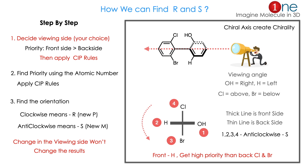Let us look at the molecule. You are seeing from the H and OH side — H and OH are near to you. OH is on the right side, hydrogen is on the left side. Chlorine is above, bromine is below. We represent this in 2D: the thicker line is the front side, the thin line is the back side.